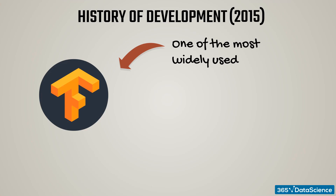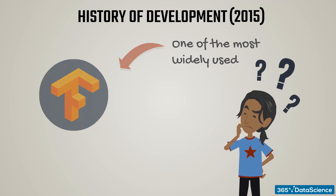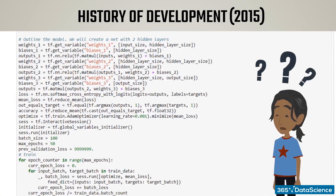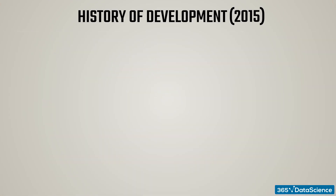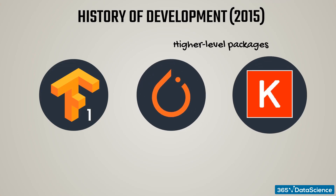Unfortunately, it has one major drawback – it's very hard to learn and use. That's why many people are disheartened after seeing just a couple of lines of TensorFlow code. Not only is the method strange, but the whole logic of coding is unlike most libraries out there. This led to the development and popularization of higher-level packages, such as PyTorch and Keras.